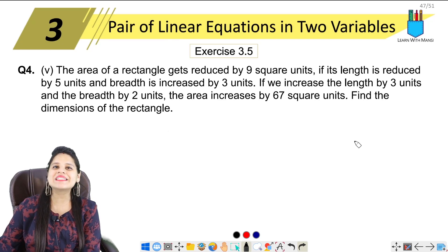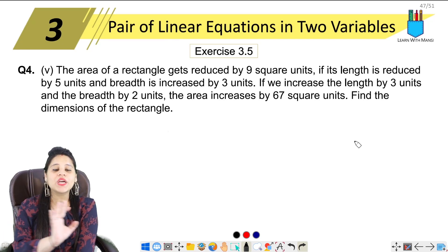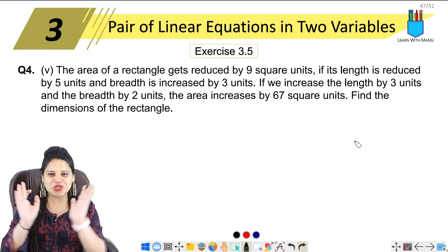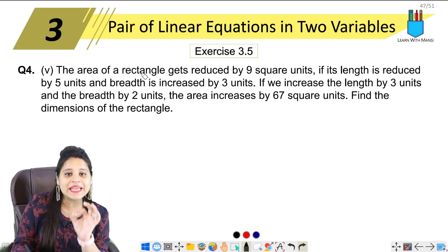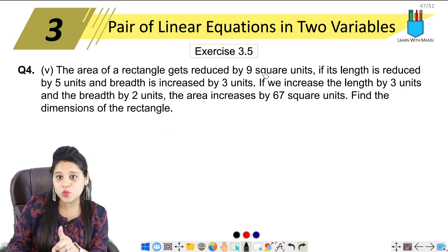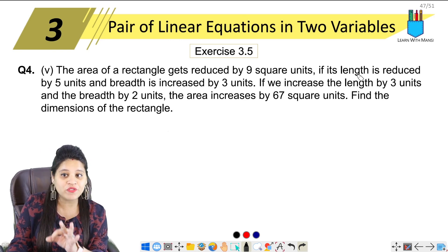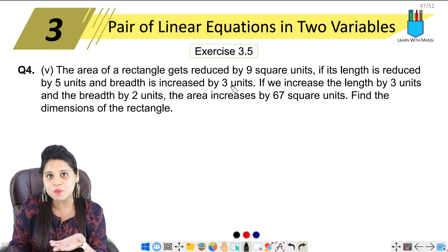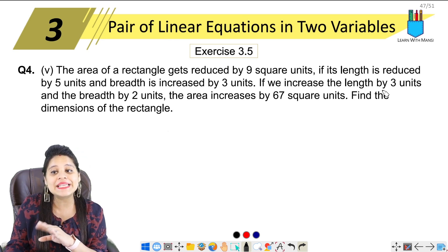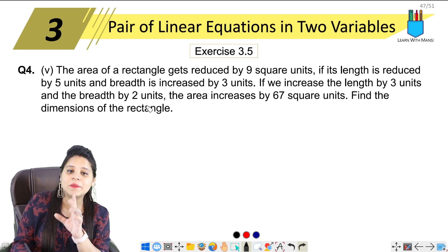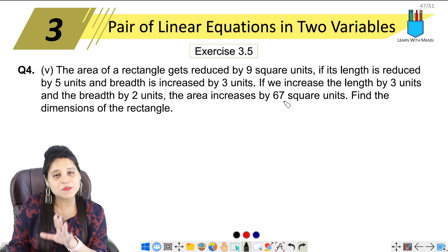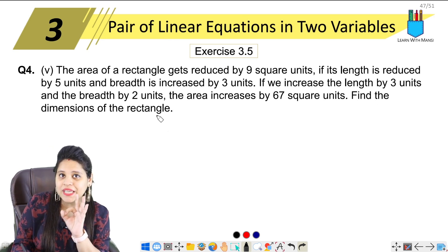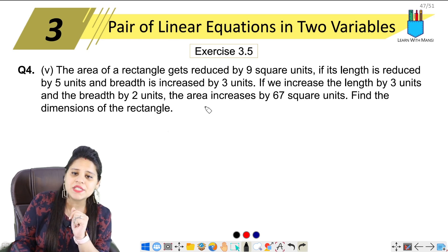Hello my lovely students, this is Mansi, welcome back to the channel. Now we are on the fifth part of question number four — the last part of this question and also the last question of this exercise. The question says: the area of a rectangle gets reduced by nine square units if its length is reduced by five units and breadth is increased by three units. If we increase the length by three units and the breadth by two units, the area increases by 67 square units. Find the dimensions of the rectangle.